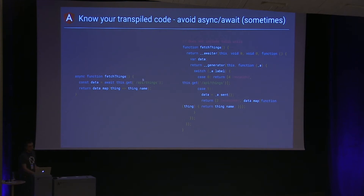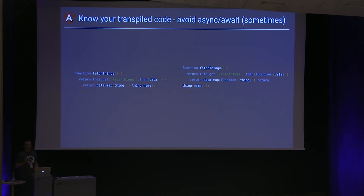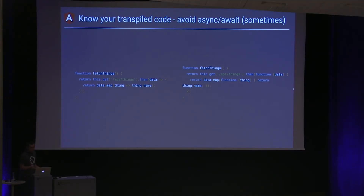The third example is async/await, which a lot of us are probably excited about. But at the state of things right now, it ends up transpiling into a lot of code. On the left, a pretty standard use case — we fetch some things from an API endpoint, await them, and then map their names to something. But what it ends up transpiling to is two nested functions, a switch statement, and a bunch of arrays. This doesn't even include the tslib, which defines awaiters and generators. For super simple use cases where you don't really get anything out of async/await, you should consider using plain old promises, which transpile to more or less the same code. For really complicated methods, async/await makes sense, but not for the super simple cases.